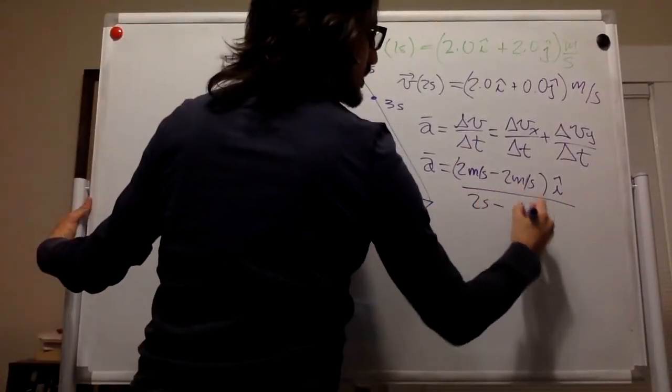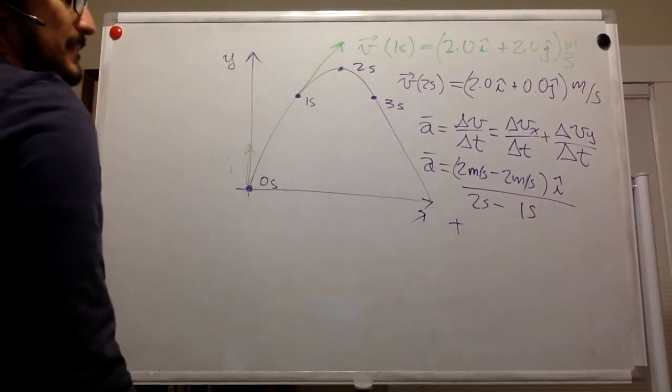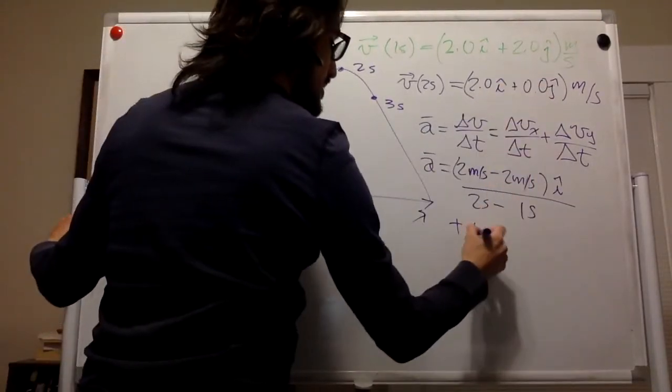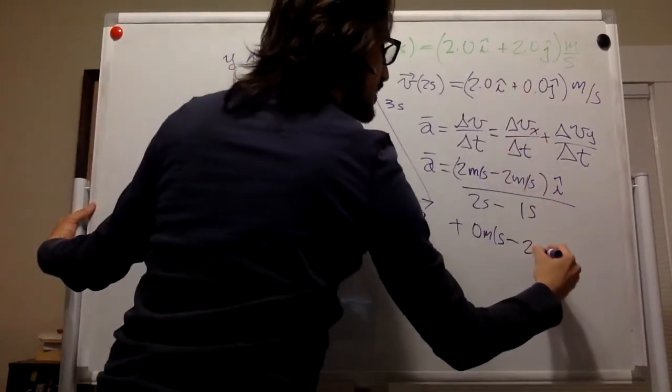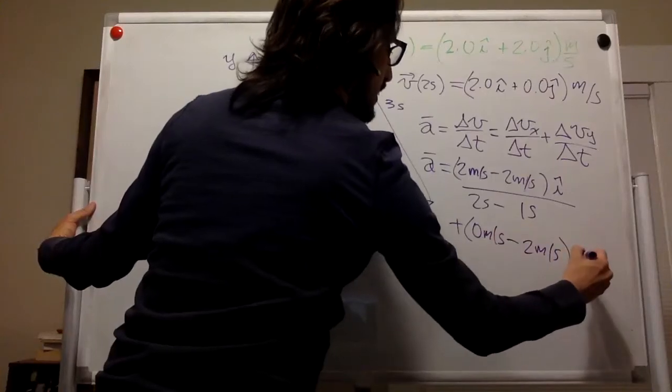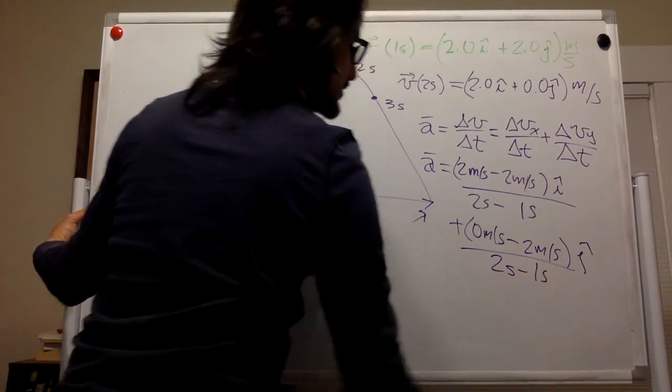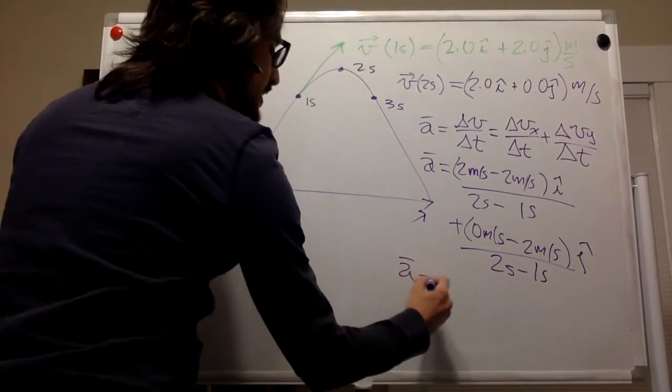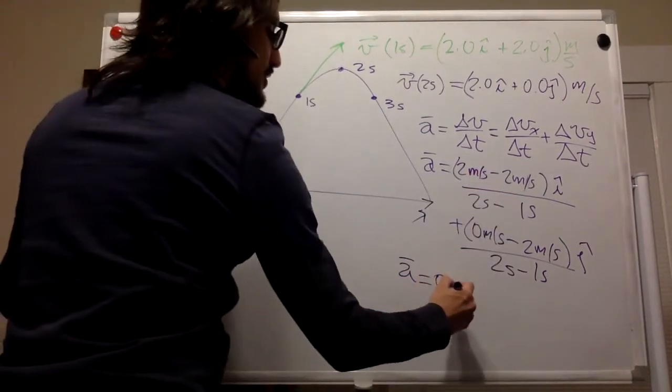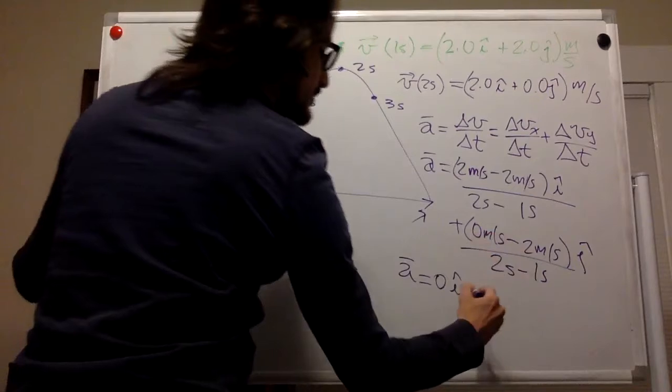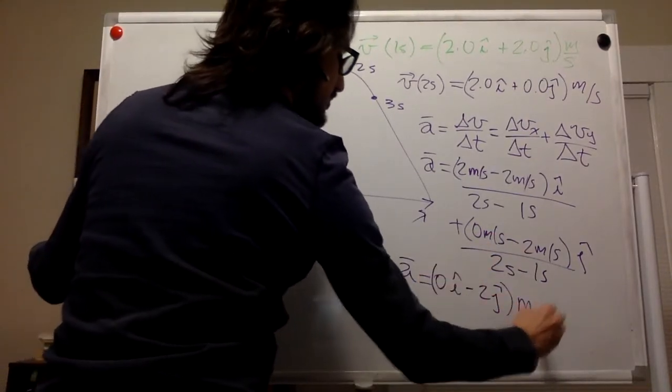2 meters per second minus 2 meters per second in the i direction, divided by delta time, 2 minus 1, 1 second, plus 0 meters per second minus 2 meters per second in the j direction, also divided by 2 seconds minus 1 second. So the acceleration, this is 0 in i, this is negative 2 in j meters per second squared.